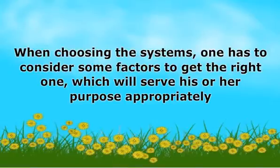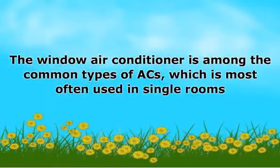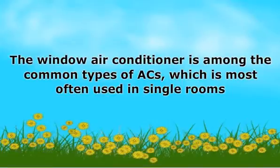There are various types of air conditioning systems available. The window air conditioner is among the common types, and is most often used in single rooms. All of the components of this system are fitted into one single unit box — that is the evaporator, condenser and cooler. This unit box is then fitted in a space made in the wall or on a windowsill.